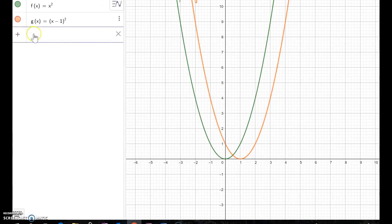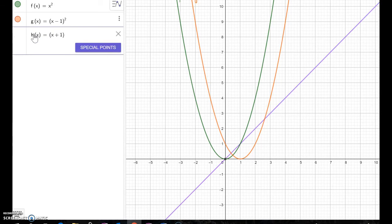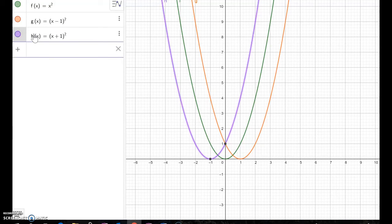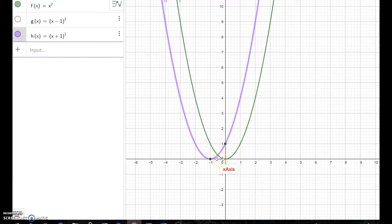Let's see on the GeoGebra. I'm going to make another function h(x) = (x+1)². To make it look easier, I'm going to turn off the g(x) function. Now you see the green one is x² function. The purple one is (x+1)² function. As you see, it moved one unit to the left.